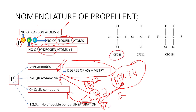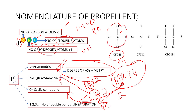Consider a chlorofluorocarbon, also called simply a propellant. First, C equals number of carbon atoms minus one. There is only one carbon, so one minus one equals zero. Next, H equals number of hydrogen atoms plus one. There are zero hydrogen atoms, so zero plus one equals one. Number of fluorine atoms is one. Hence we call it Propellant 011, or simply Propellant 11.